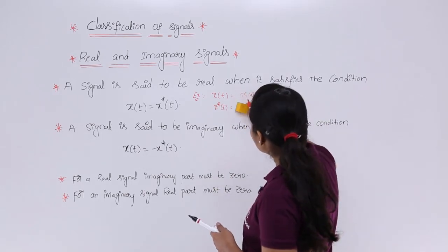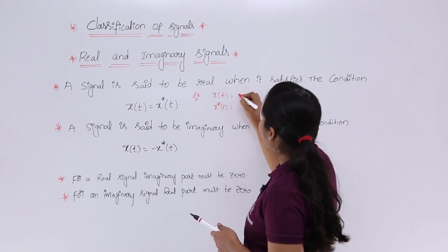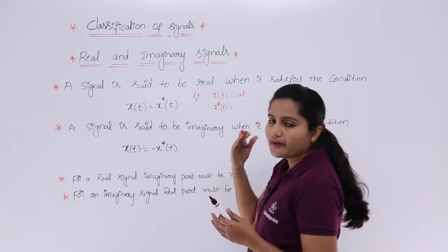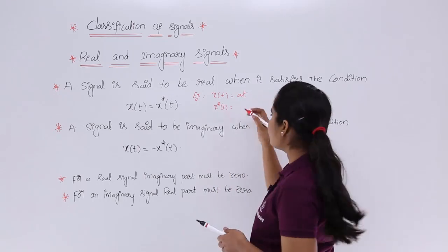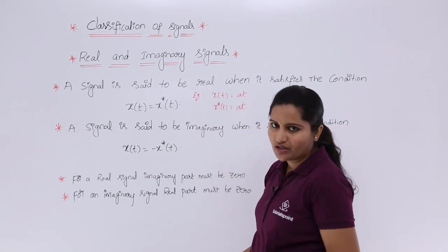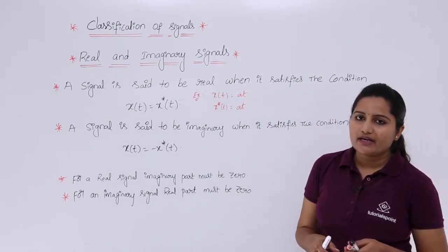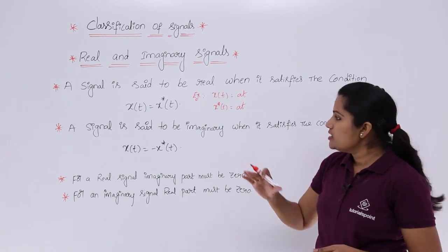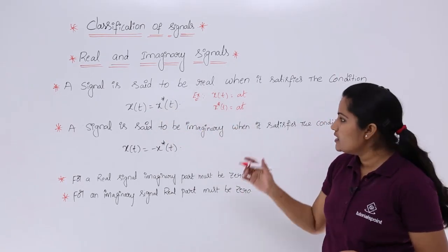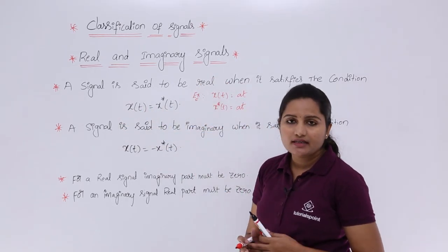Or for example you can consider x(t) = at. After performing the complex conjugate you are going to get the same thing, because you are not having any imaginary part. The complex conjugate only affects the imaginary part. So here x*(t) gives the same result, and it satisfies the condition x(t) = x*(t) — this is a real signal.